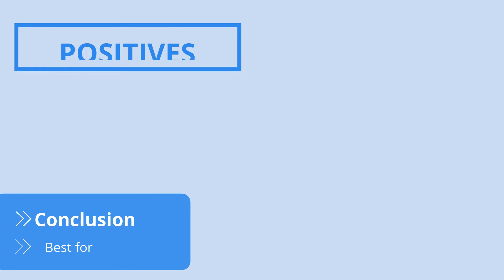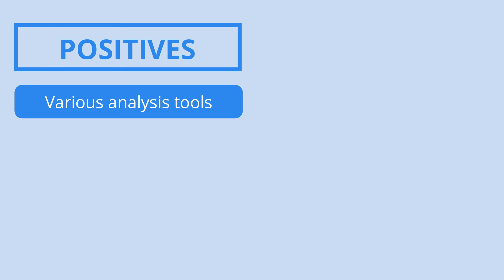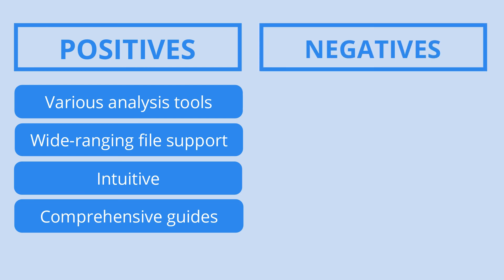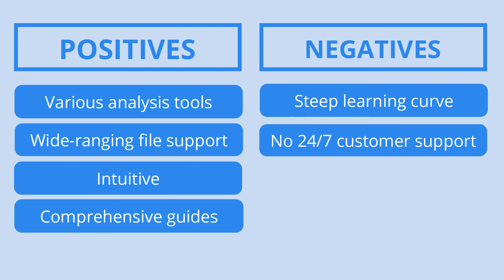If you plan to do qualitative data analysis, we highly recommend trying out Atlas.ti. The software's helpful features make it easier to organize and analyze your data, meaning you'll arrive at conclusions faster. Atlas.ti supports various file types, allowing you to examine text, video, and audio without leaving the platform. However, the high number of tools can be a double-edged sword, as the software may have a steep learning curve for some — though Atlas.ti makes up for that by being intuitive and offering comprehensive guides.